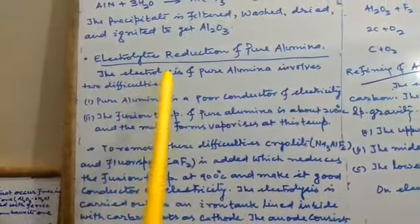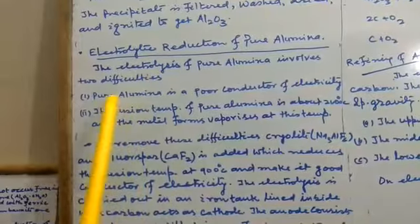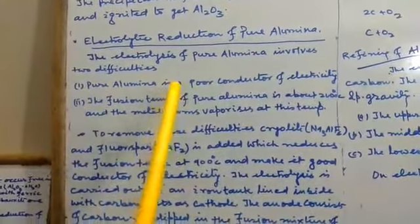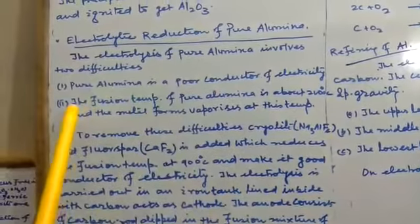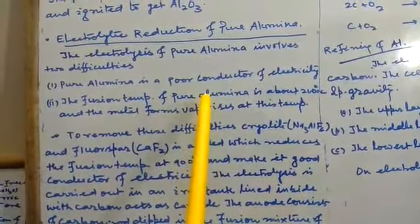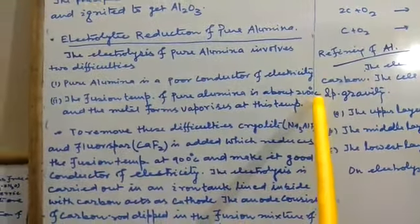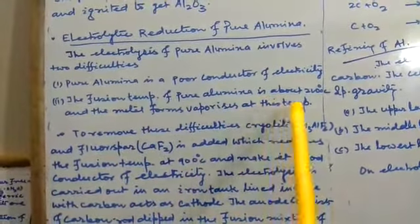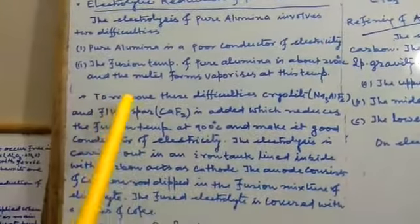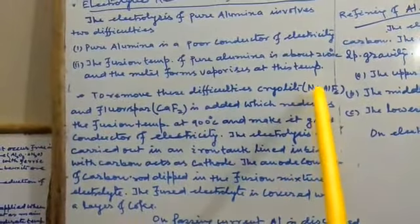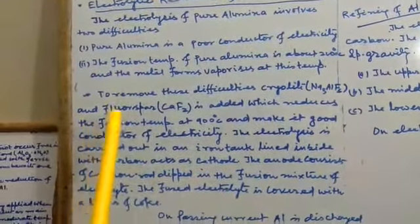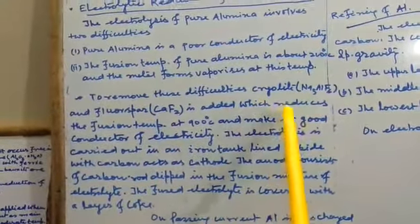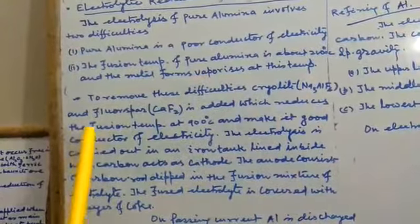Now second step is electrolytic reduction of pure alumina. The electrolysis of pure alumina involves two difficulties. First, pure alumina is a poor conductor of electricity. And second, the fusion temperature of pure alumina is about 2000 degrees Celsius and metal forms vaporizes at this temperature. To remove these difficulties, cryolite, that is Na3AlF6, and fluorspar CaF2 is added, which reduces the fusion temperature to 900 degrees Celsius and makes it good conductor of electricity.